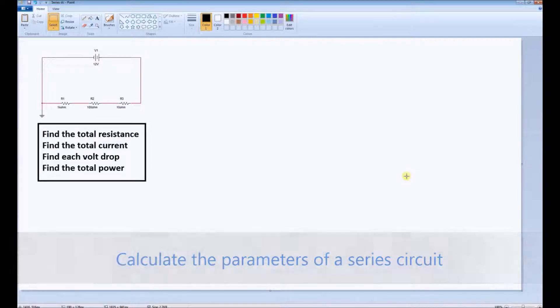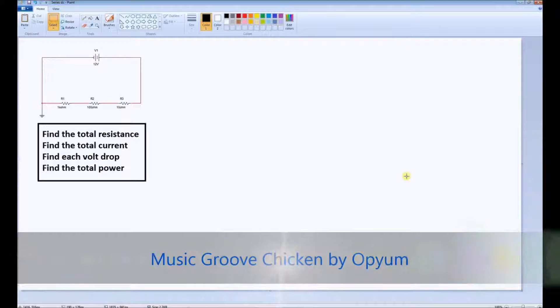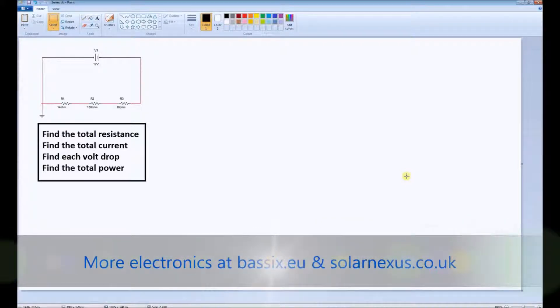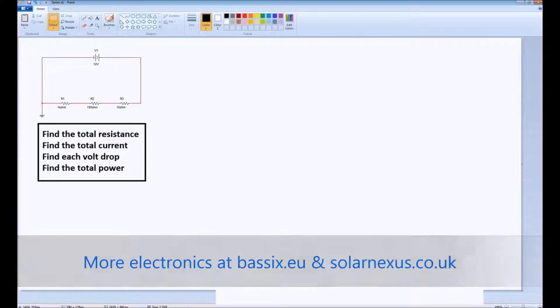We will start with the total resistance, we'll go on to find the total current, then we will find the volt drop across each of the resistors, and finally the total power. For each stage we will also show you how to do this in simulation, so you can use simulation to confirm the results of your calculation.